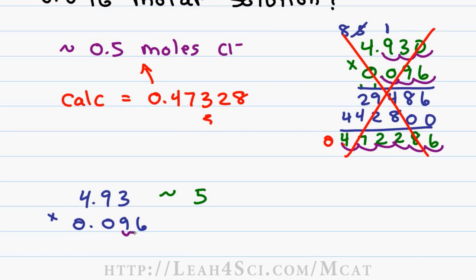0.096, 96 is close to 100. So if I replace this portion with a number of 100, what I'm really looking at is 0.1. Now I have a much simpler problem to solve and that's 5 times 0.1.